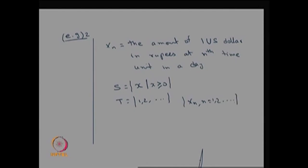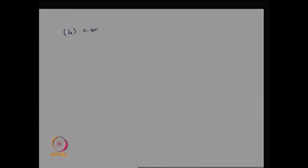Let me go to the fourth type — the fourth classification of a stochastic process: continuous time, continuous state stochastic process. That means the possible values of the parameter space are uncountably many, giving continuous time, and the possible values of the state space are also uncountably many, giving the continuous state stochastic process.